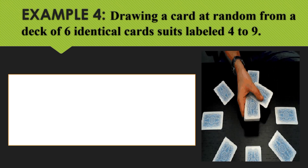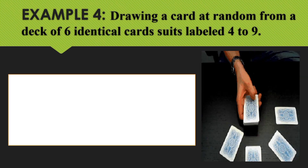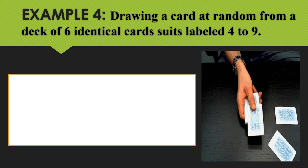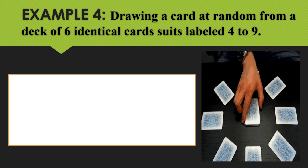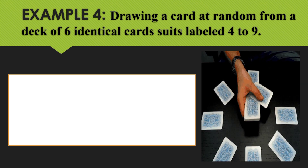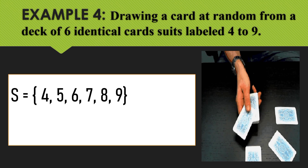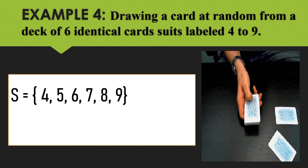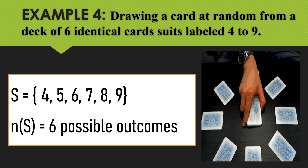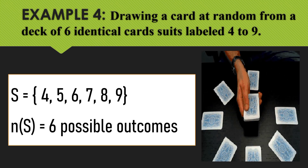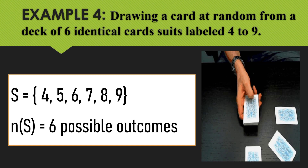Example number 4: get the sample space and the total possible outcomes when tasked to draw a card at random from a deck of 6 identical cards labeled 4 to 9. So we start from 4, 5, 6, 7, 8, 9. Therefore, our sample space is S = {4, 5, 6, 7, 8, 9} and the total possible outcomes is 6, because we only have 6 identical cards.